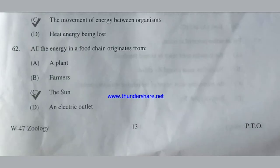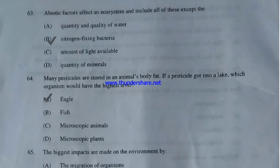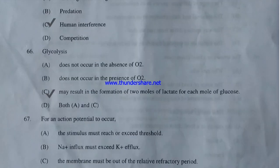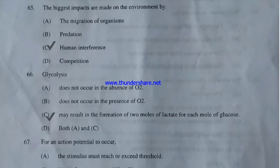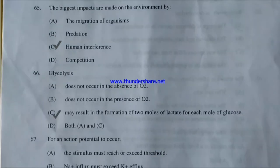Abiotic factors affect an ecosystem and include all of these except — quantity and quality of water, nitrogen-fixing bacteria, amount of light available, or quantity of minerals? The correct answer is option B — nitrogen-fixing bacteria (biotic, not abiotic). Many pesticides are stored in animal body fat. If a pesticide entered a lake, which organism would have the highest level — eagle, fish, microscopic animals, or microscopic plants? The answer is A — eagle, due to biomagnification.